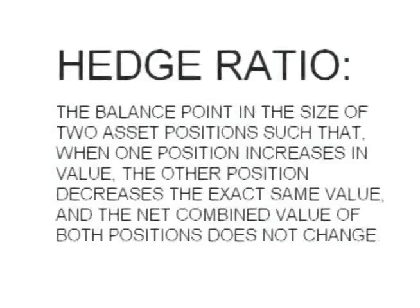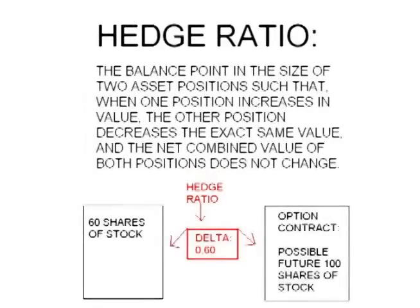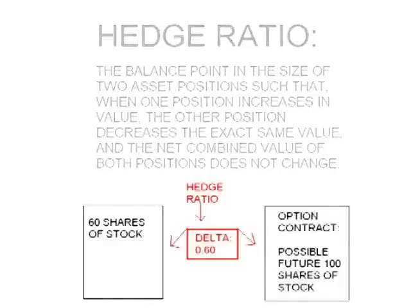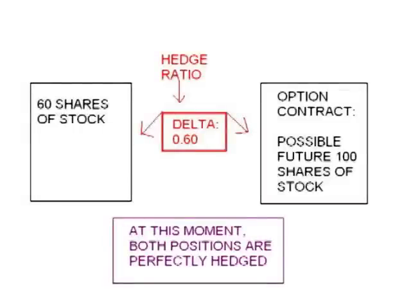Taking two offsetting positions: in the first position, I short — also called write — a call option on a stock. I then calculate the hedge ratio, also known as the option's delta. This is the ratio of stock I must hold per option contract that I short so that both positions are hedged. For example, if the delta is 0.6 and an option contract is for 100 shares, I buy 60 shares of stock using the money collected from selling the call option and borrowing the rest at the risk-free rate by shorting a bond. At that moment I am perfectly hedged — the option I shorted will increase or decrease in value the exact opposite amount as the stock position I hold.